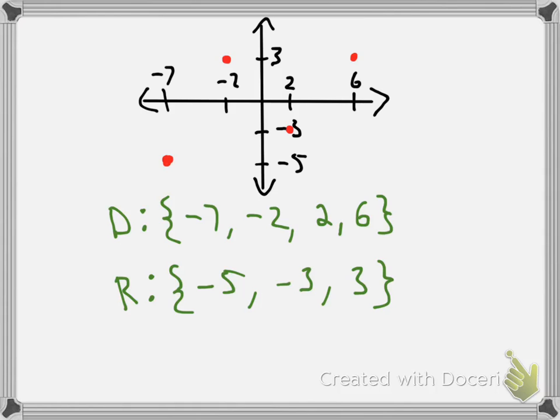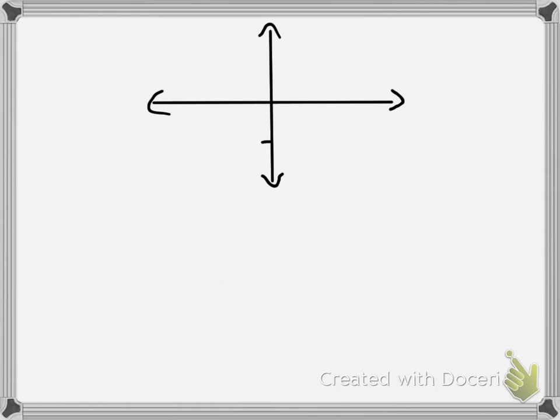Next, let's see what happens when you have an infinite number of points, like on a parabola. We need to use that special notation we learned about before, as opposed to just listing them, because there are an infinite number of points on this graph — which means there's an infinite number of x values for the domain and an infinite number of y values for the range.